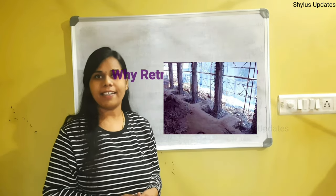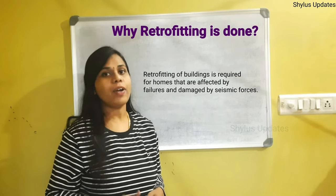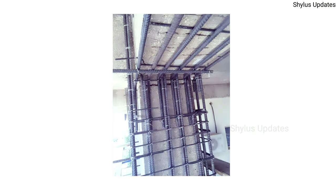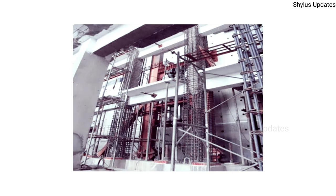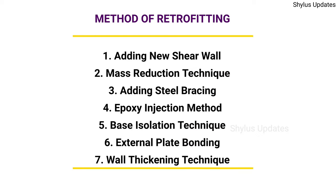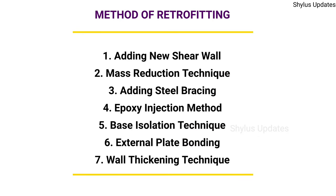Why is retrofitting done? Retrofitting of buildings is required for homes that are affected by failures and damages due to seismic forces. Retrofitting of RCC structural members is carried out to regain the strength of deteriorated structural concrete elements. The main goal of retrofitting is to stabilize the current structure of buildings and make them earthquake resistant. Most common methods of retrofitting are: adding new shear wall, mass reduction technique, adding steel bracing, epoxy injection method, base isolation technique, external plate bonding, and wall thickening technique.